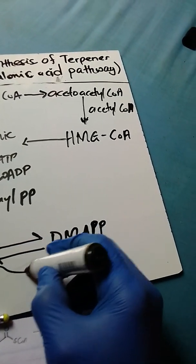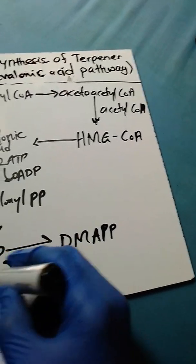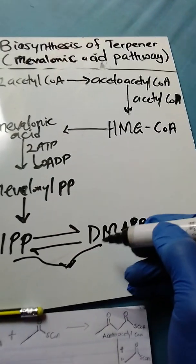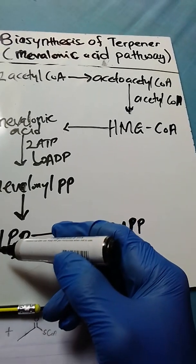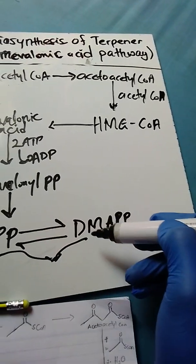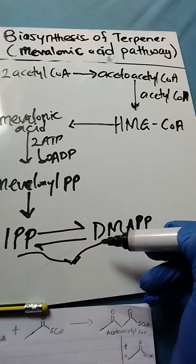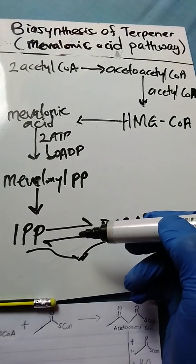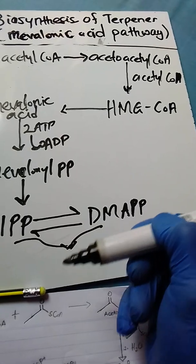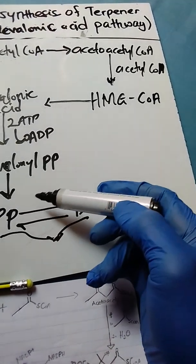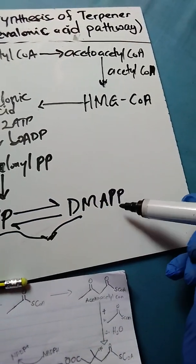These two isomers are what is used in the synthesis of terpenes. So we have IPP and DMAPP. One will act as a nucleophile, the other will act as an electrophile in the addition reaction to produce terpenes. Each of these has a unit of isoprene.